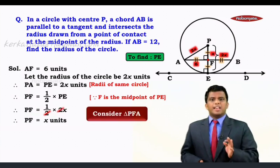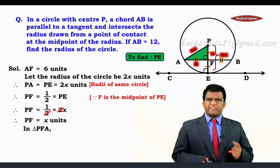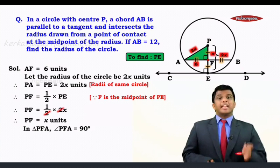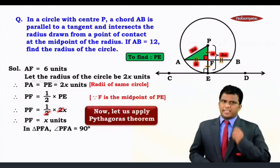How does it help? Let's consider triangle PFA. Now in triangle PFA, we know measure angle PFA is 90 degrees. We proved it earlier. That means this triangle is a right angle triangle. Let's apply the Pythagoras theorem.